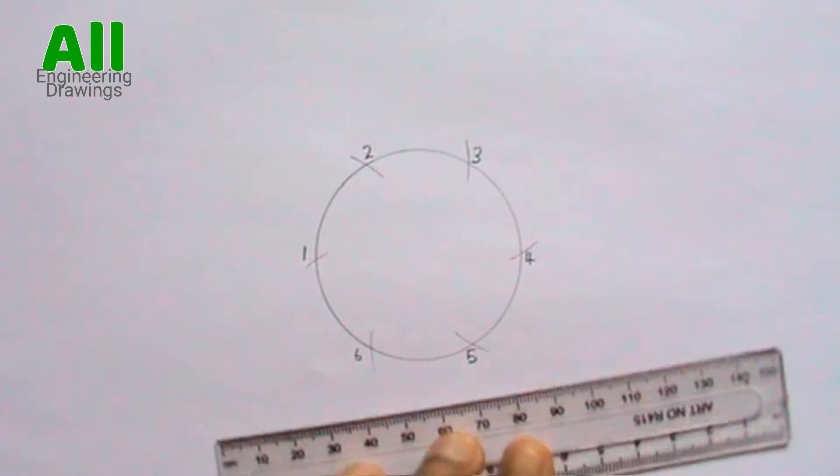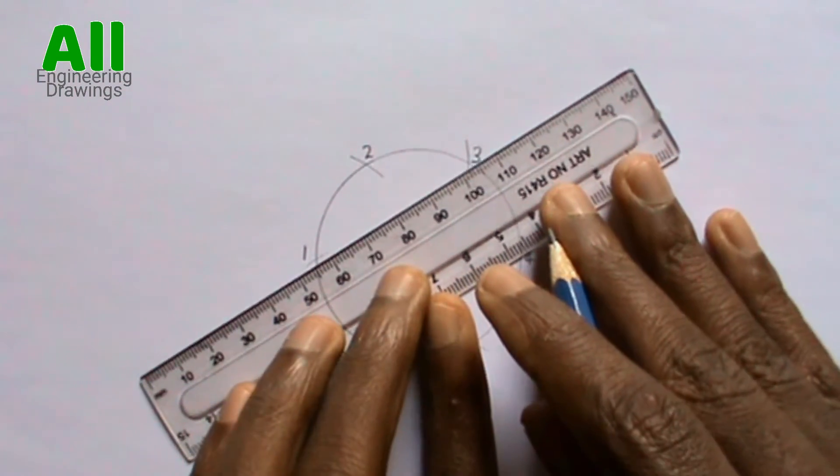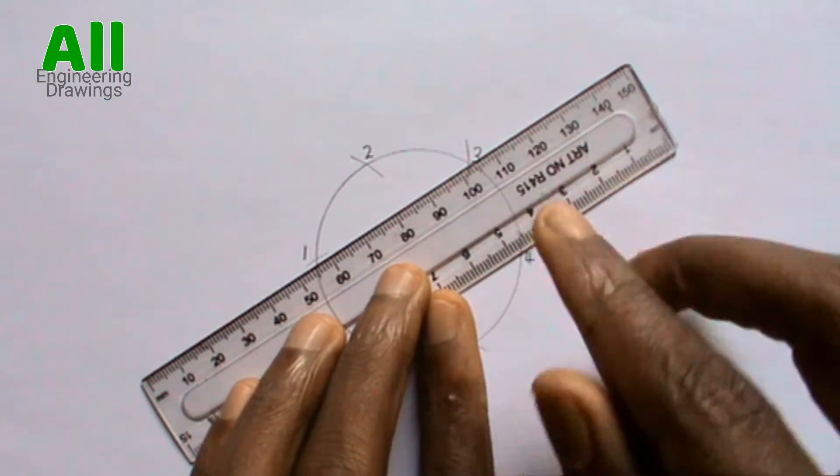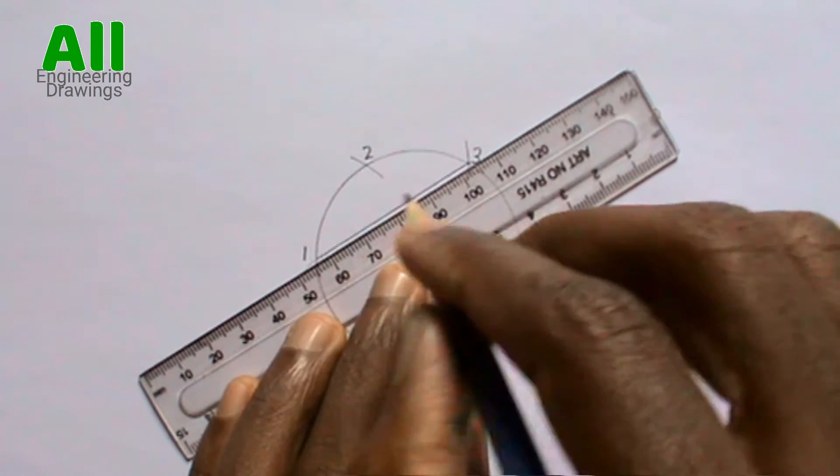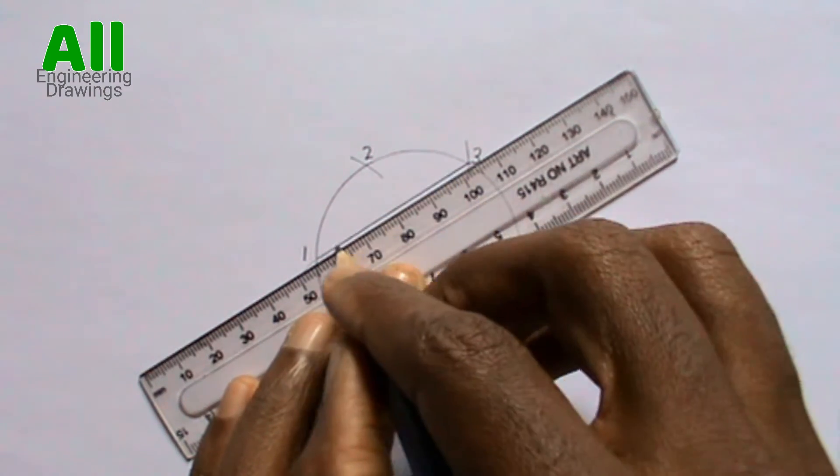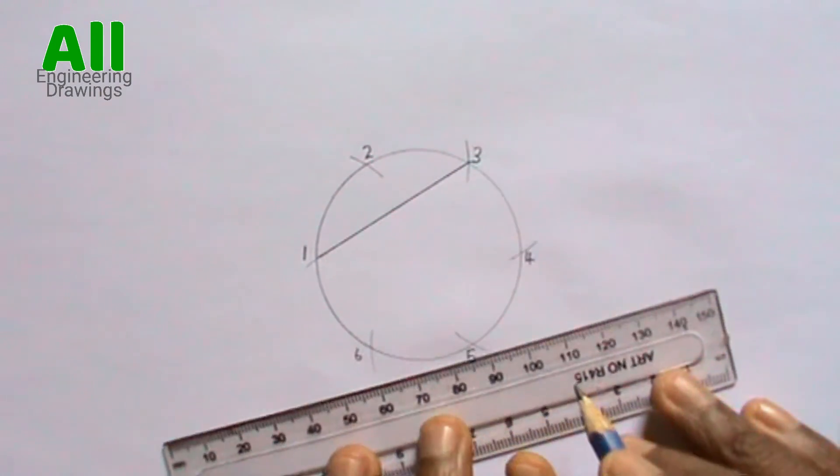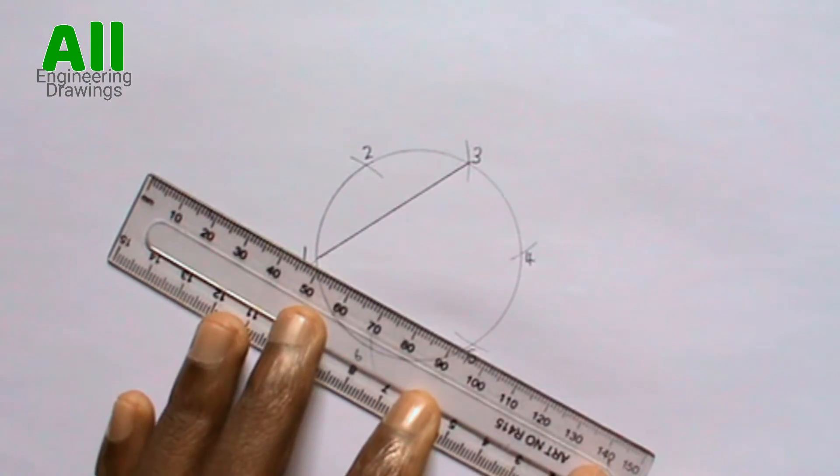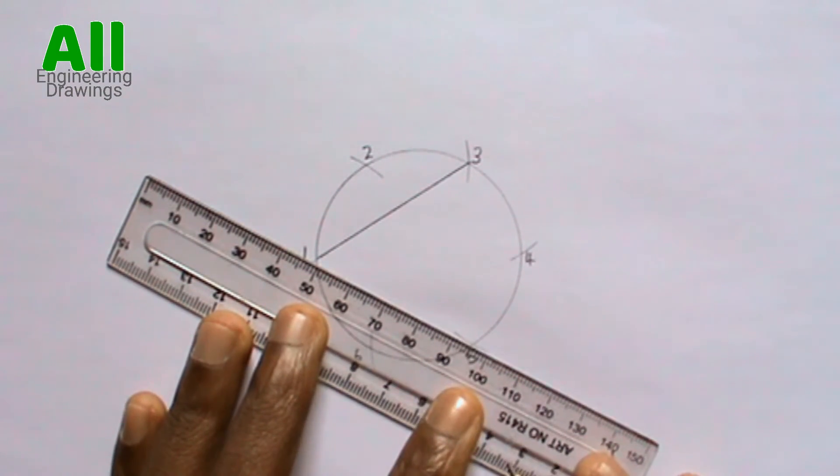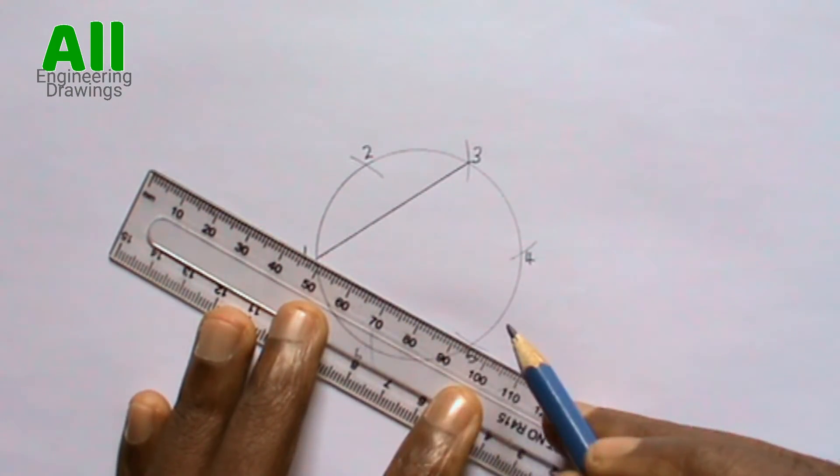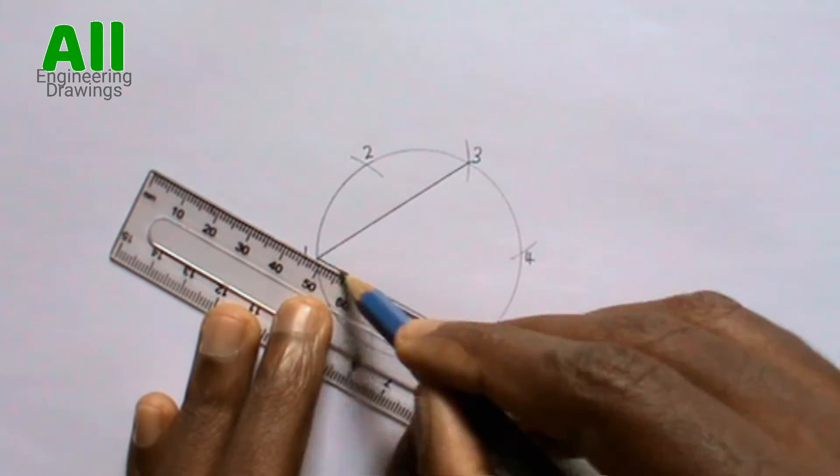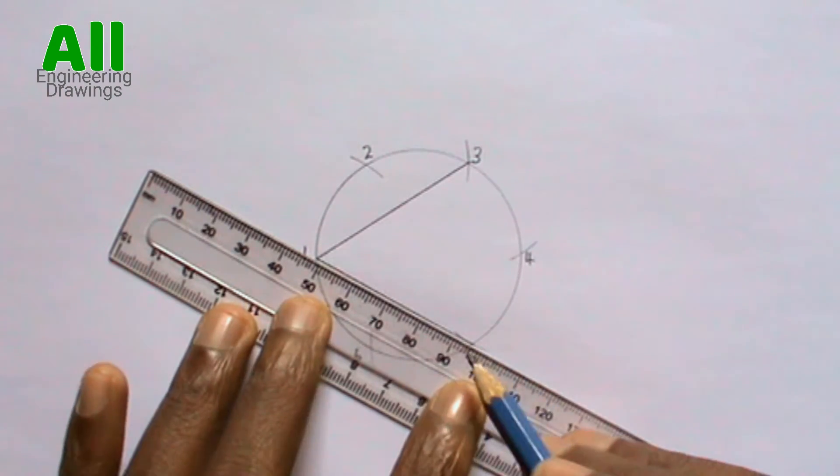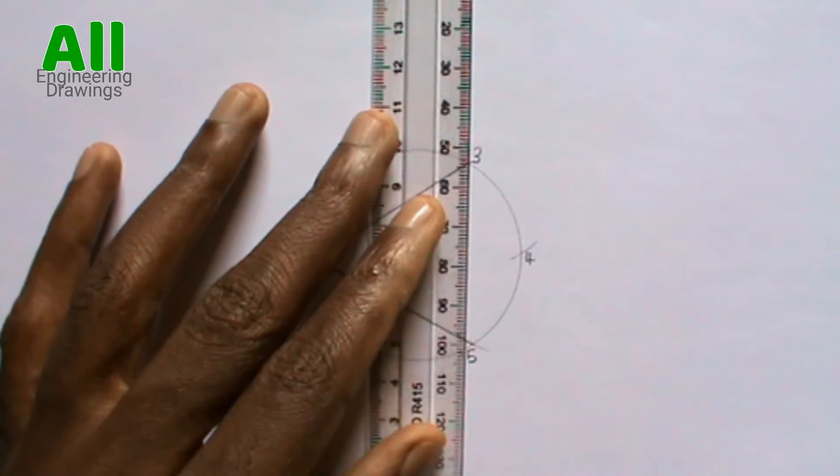After that, join points one and point three with a straight line. Join points one and point five. Also join points three and point five.